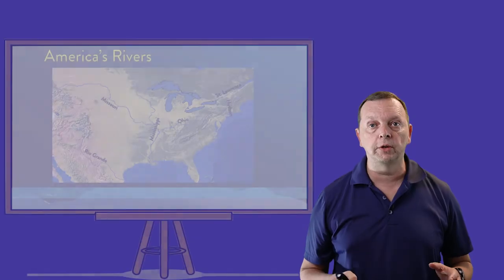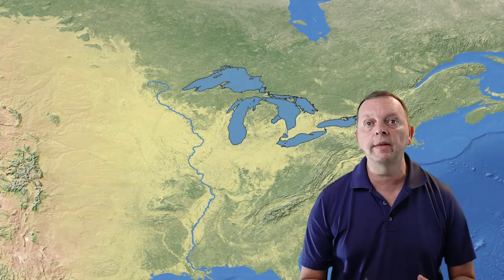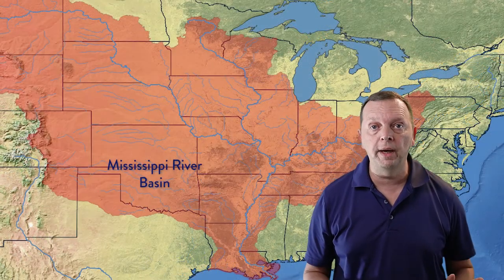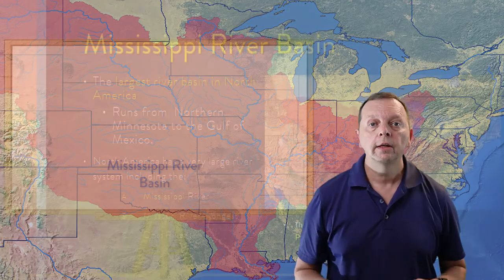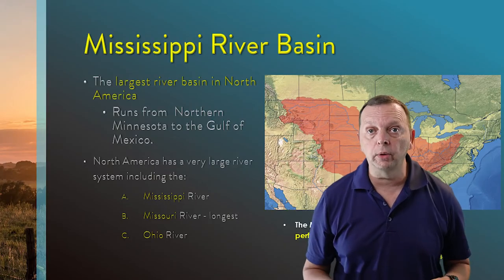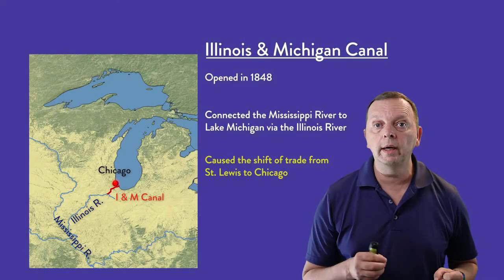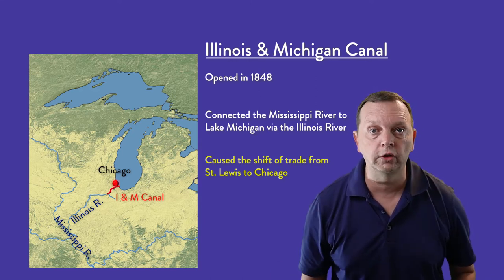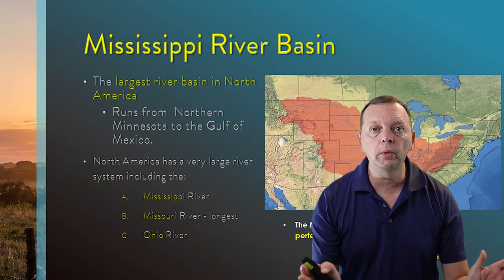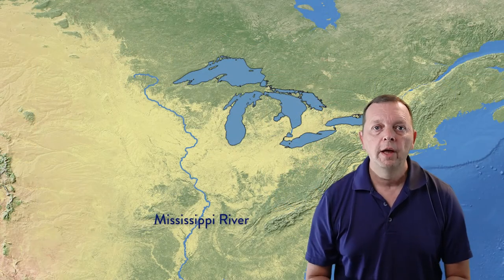Another incredible waterway is the Mississippi River. Forming the Mississippi River Delta in the Gulf of Mexico, the Mississippi River flows generally straight north all the way up to Minnesota. The Mississippi River is the central river of the Mississippi River Basin, which drains all the area between the Appalachians and the Rocky Mountains. The Mississippi River provides ship travel into the heartland of the continent, and when the Illinois and Michigan Canal was opened, the Mississippi was able to connect to the Great Lakes as well. The two major tributaries are the Ohio River from the east and the Missouri River from the west.